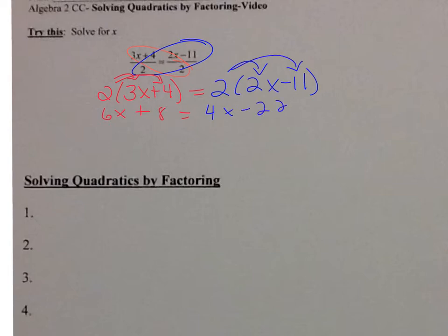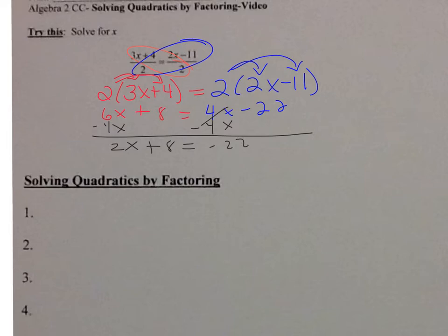Now we're going to solve. So minus 4x — 6x minus 4x is 2x — plus 8 is equal to negative 22. Minus 8 from both sides, we get 2x is equal to negative 30. Divide by 2, we get x is equal to negative 15.